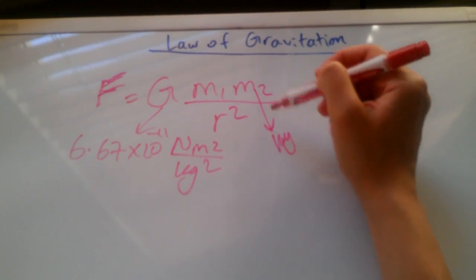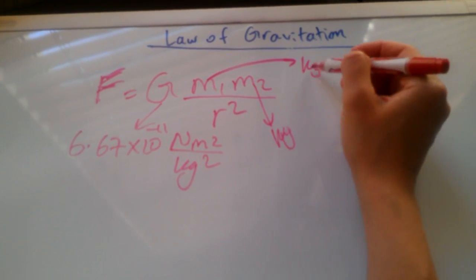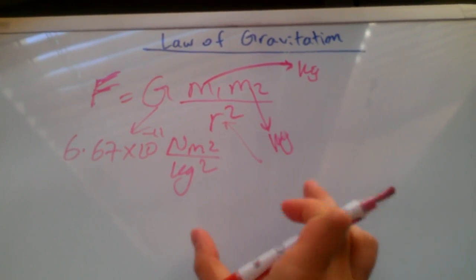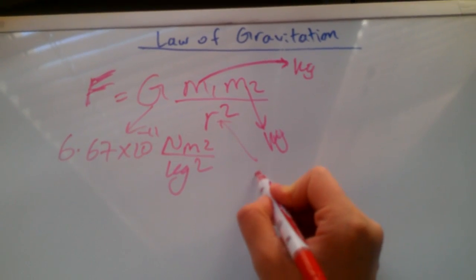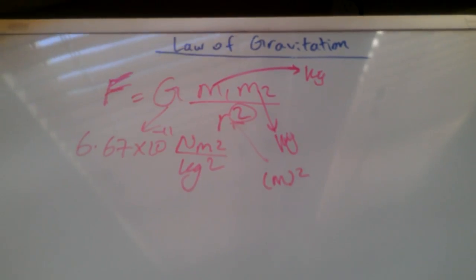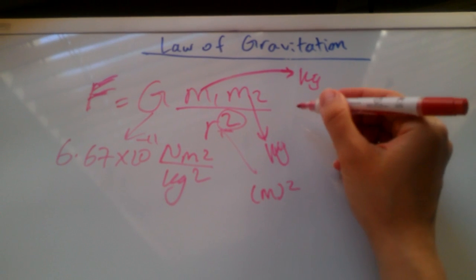The masses are both in kilograms. R is the distance between the two masses in meters, but we need to square it. Please appreciate this fact.